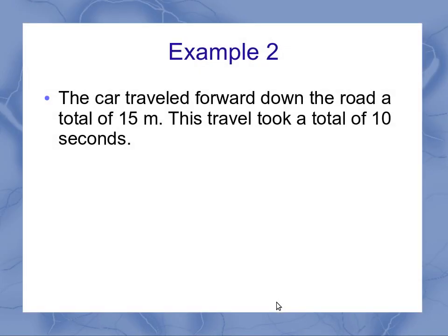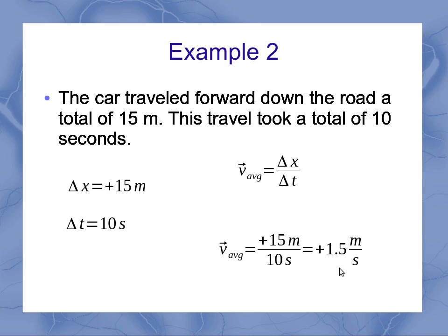Now sometimes you're given a word problem where you don't have as much information. You don't have the specific positions and the specific times that you're looking at. In these cases, you can just figure out that the total time it took was 10 seconds and the total displacement was 15 meters. We use the units to help us figure out which one goes into which place here. When I use my equation for my average velocity then, I can see that the average velocity for this period, where it went 15 meters forward in 10 seconds, is 1.5 meters per second.